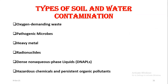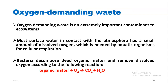Types of soil and water contaminants include: oxygen-demanding waste, pathogenic microorganisms, heavy metals, radionuclides, dense non-aqueous phase liquids (DNAPLs), and hazardous chemicals and persistent organic pollutants. Oxygen-demanding waste is an extremely important contaminant to ecosystems.